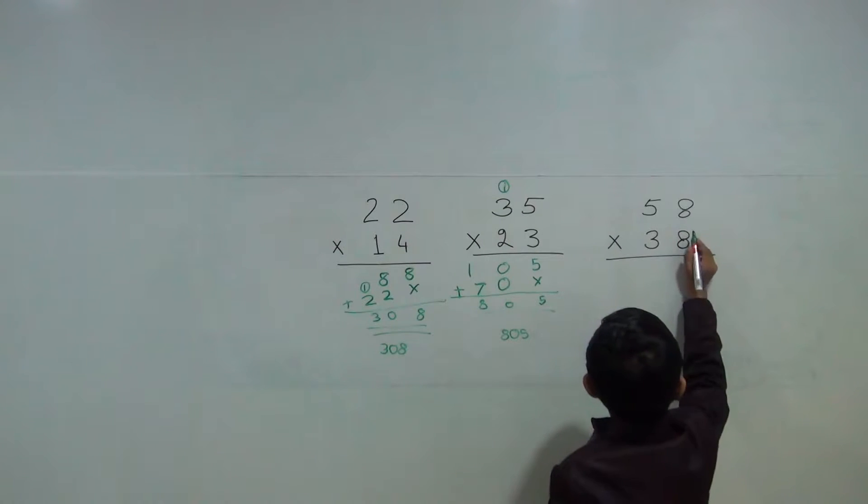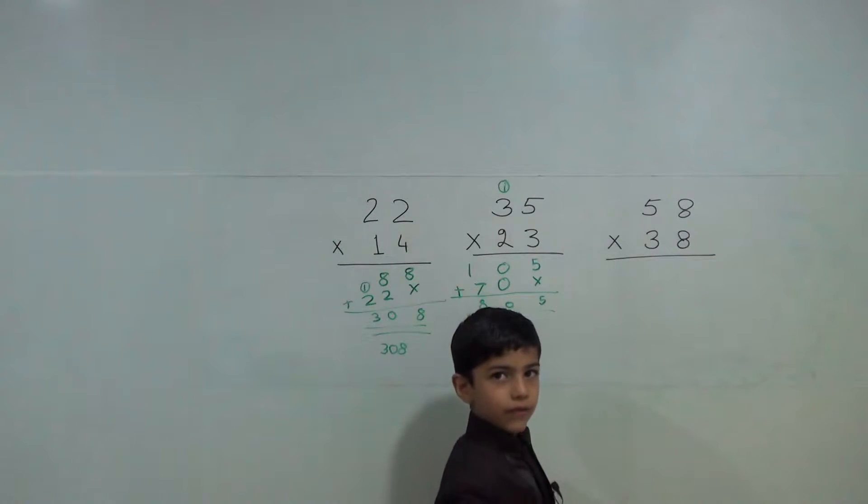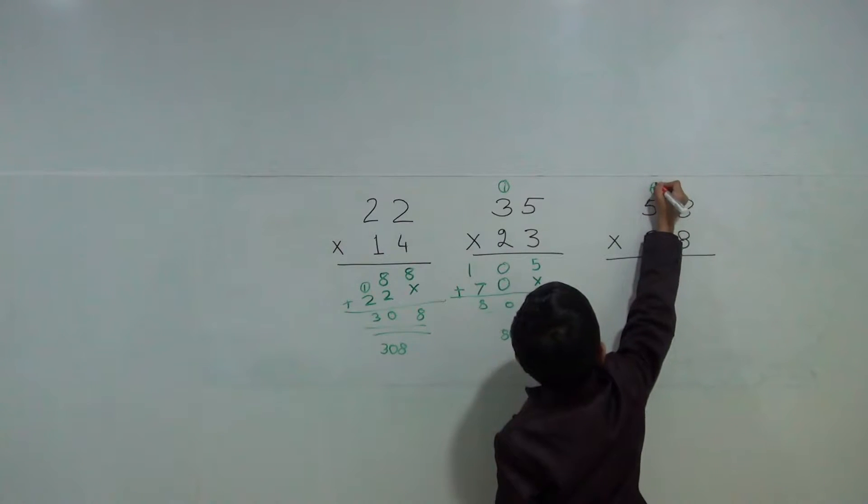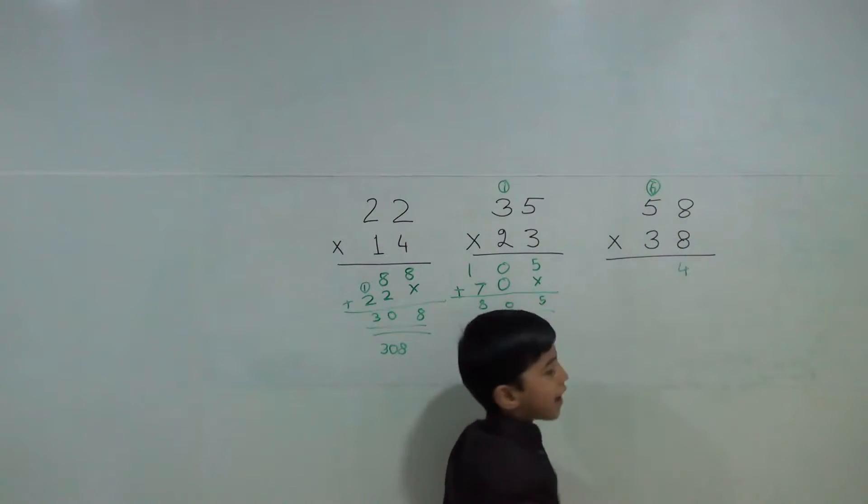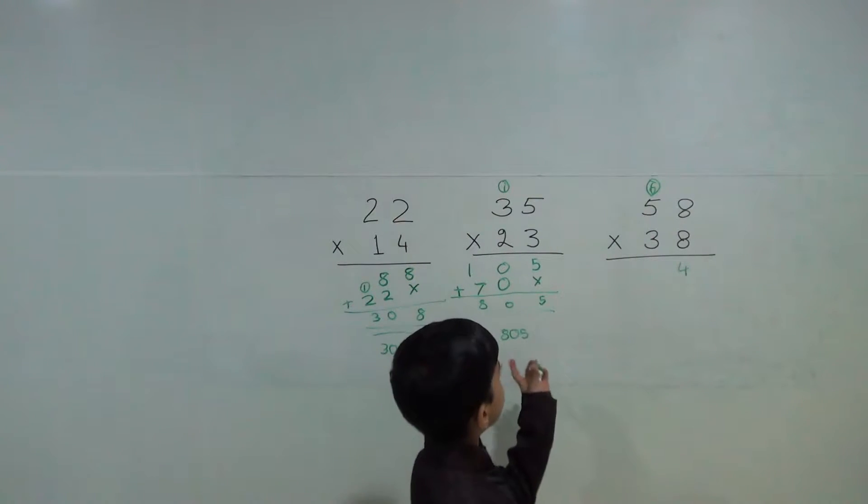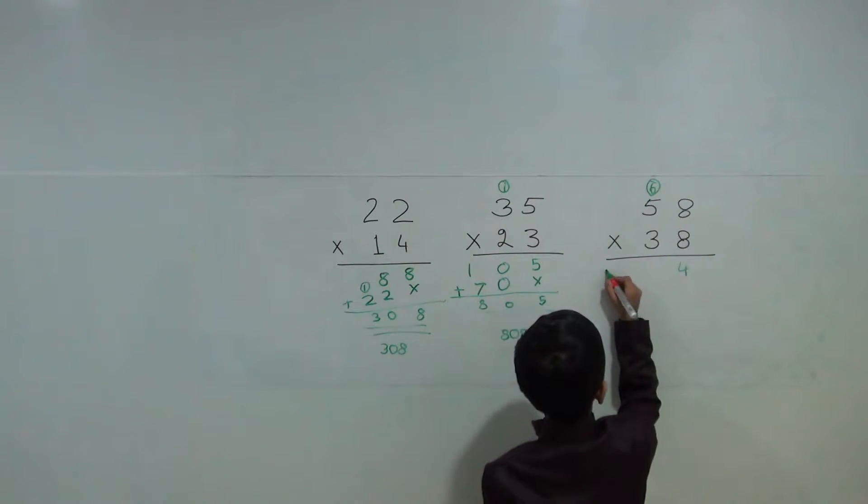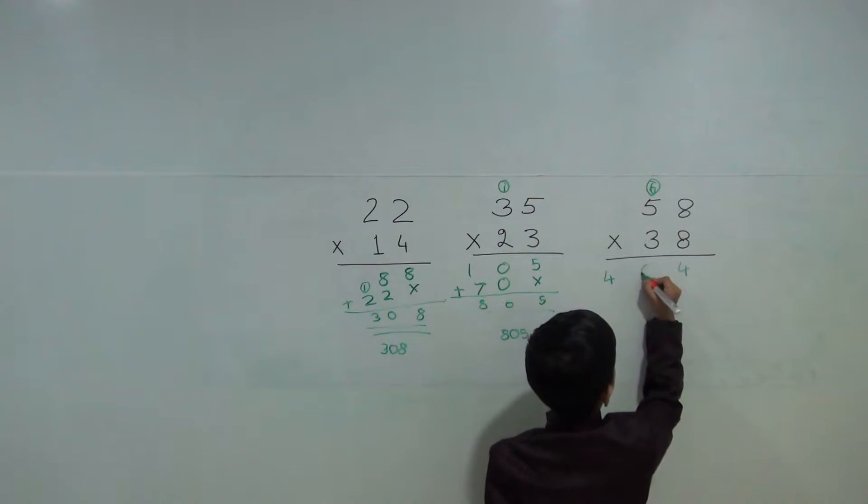8 times 8 are 64. 6 carry over and 4. 8 times 5 are 40. 40 plus 6 is 46. 4 and 6.